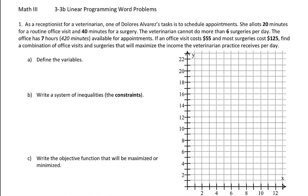You should print these notes if you can — that would be really helpful, especially with the grids we're going to be using. So first off, we have a problem: as a receptionist for a veterinarian, one of Dolores Alvarez's tasks is to schedule appointments. She allots 20 minutes for a routine office visit and 40 minutes for a surgery. The veterinarian cannot do more than six surgeries per day. The office has seven hours — 420 minutes — available for appointments. If an office visit costs $55 and a surgery costs $125, find the combination of office visits and surgeries that will maximize the income the veterinarian practice receives per day.